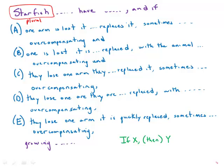For example, in A, if an arm is lost it replaces it - 'it' refers to starfish, so that's incorrect. If one arm is lost and it is replaced, the single arm - they lose one arm, they replace it, all the pronouns are correct.